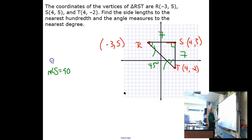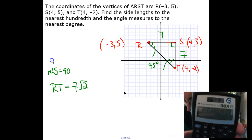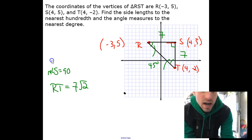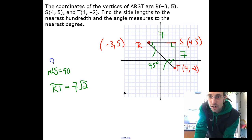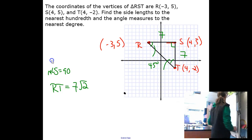This side here, RT, is equal to 7√2. I can do that on my calculator: 7 times the square root of 2 equals 9.899. It says round to the nearest hundredth, so I'm going to take that and round it up, it's going to be 9.90.